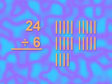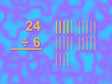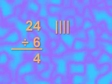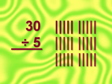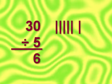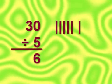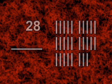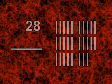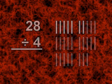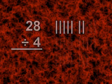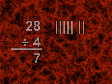24 divided by 6 equals 4. 30 divided by 5 equals 6. 28 divided by 4 equals 7.